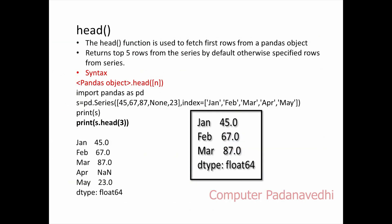The next methods are len(), count(), and head(). The head() function is used to fetch the first rows. For example, s.head(3) returns the first 3 rows. By default it returns 5 rows. The head() function is very important.